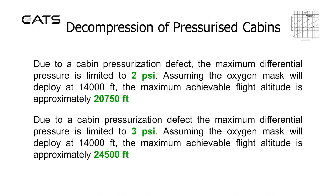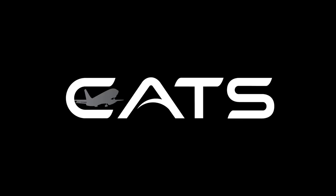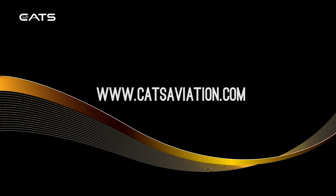Due to a cabin pressurisation defect, the maximum differential pressure is limited to 3,000 feet. Assuming the oxygen mask will deploy at 14,000 feet, the maximum achievable flight altitude is approximately 24,500 feet from the graph.